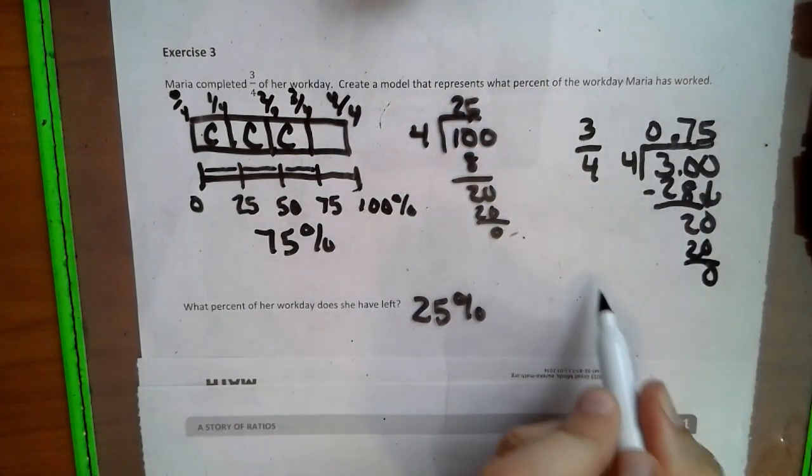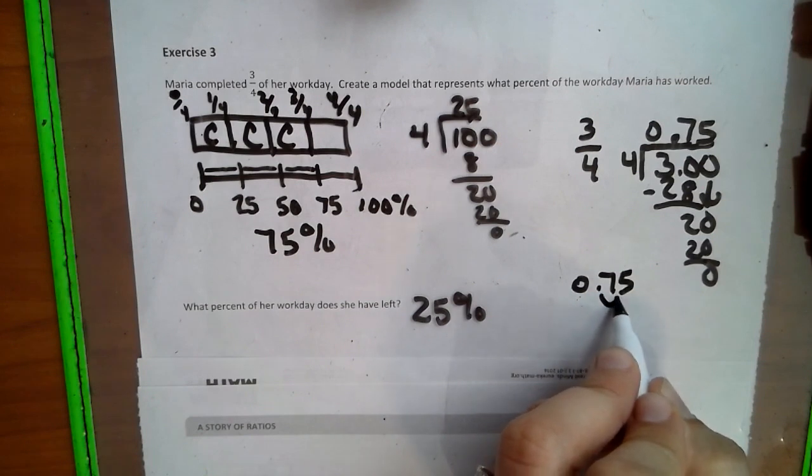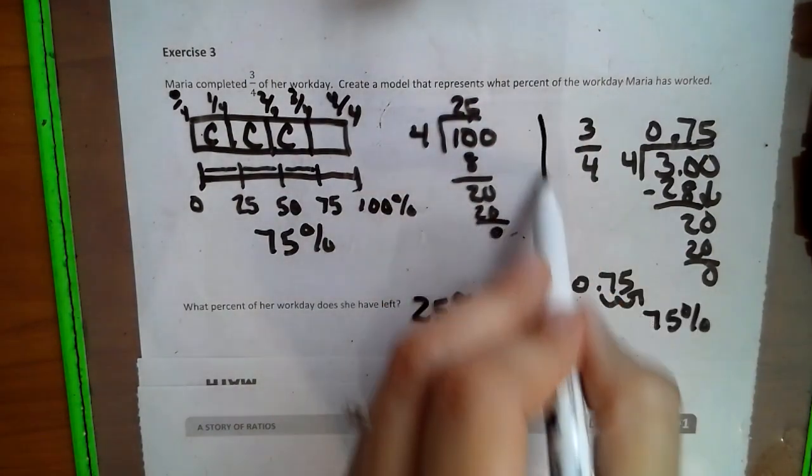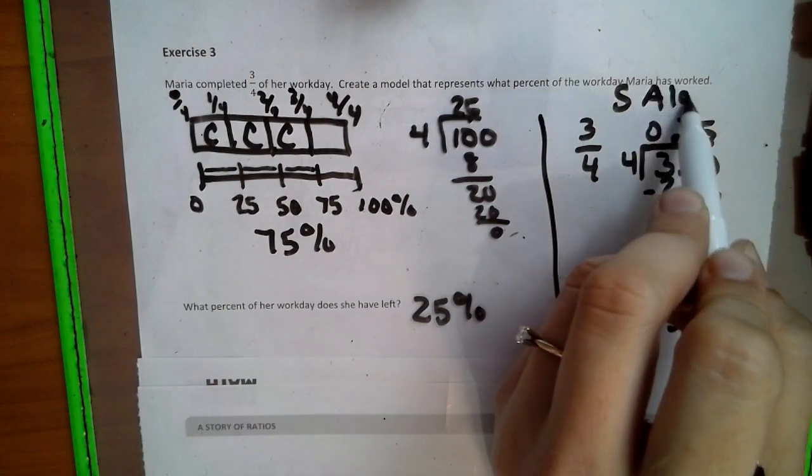See how we have 0.75? I'm just going to bring that down here. Decimal changes to a percent by two jumps towards the percent sign, so that would change to 75%. This is considered standard algorithm way.